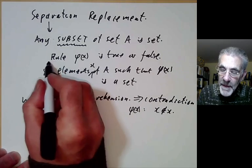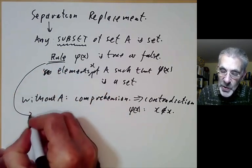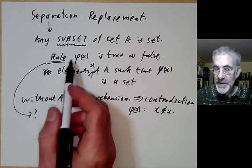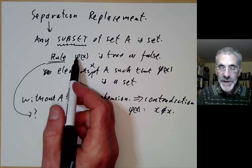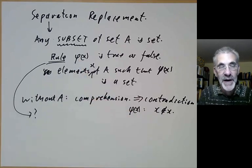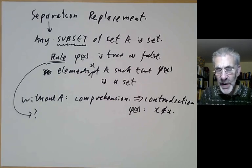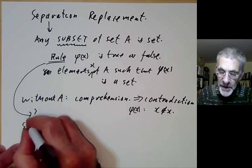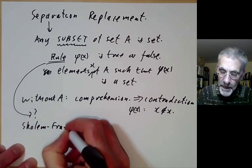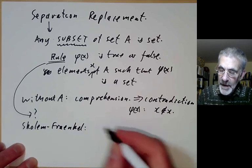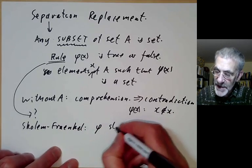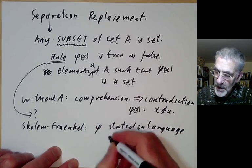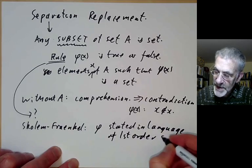There's a bit of a problem here: what do we mean by a rule? This was rather controversial. Zermelo just said that phi had to be what he called a definite property — some property that's always either true or false for any set. The trouble is this is rather vague because you don't know what a property is. So Skolem and Frenkel added the condition that phi has to be stated in the language of first-order set theory.